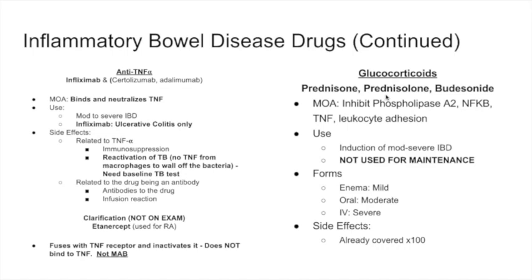Next are the glucocorticoids: prednisone, prednisolone, and budesonide. They inhibit phospholipase A2, NF-kappa-B, TNF, and leukocyte adhesion. Glucocorticoids are used to induce remission of moderate-to-severe disease — they are not used for maintenance. Budesonide suppositories or enema can be used for mild IBD, specifically ulcerative colitis affecting the rectum. Oral glucocorticoids are used for moderate disease; IV glucocorticoids for severe disease.